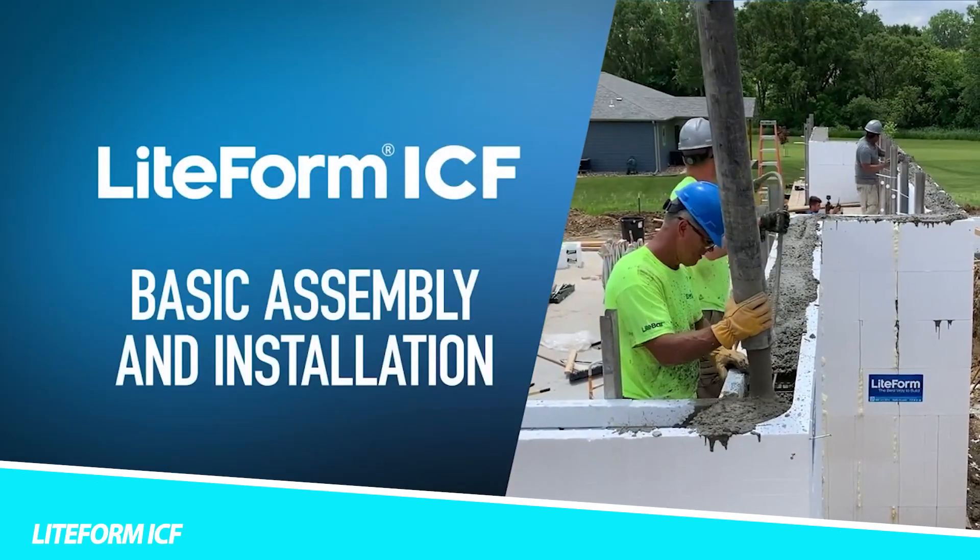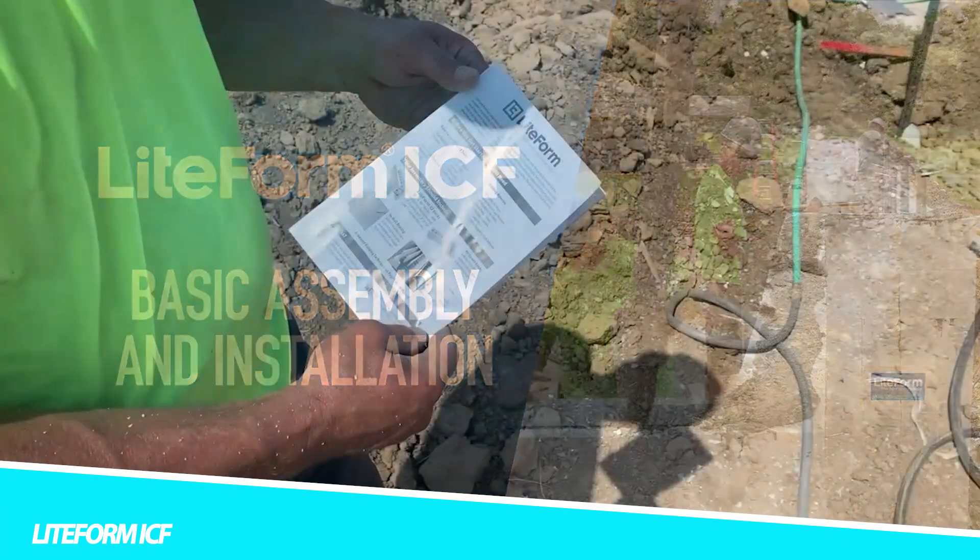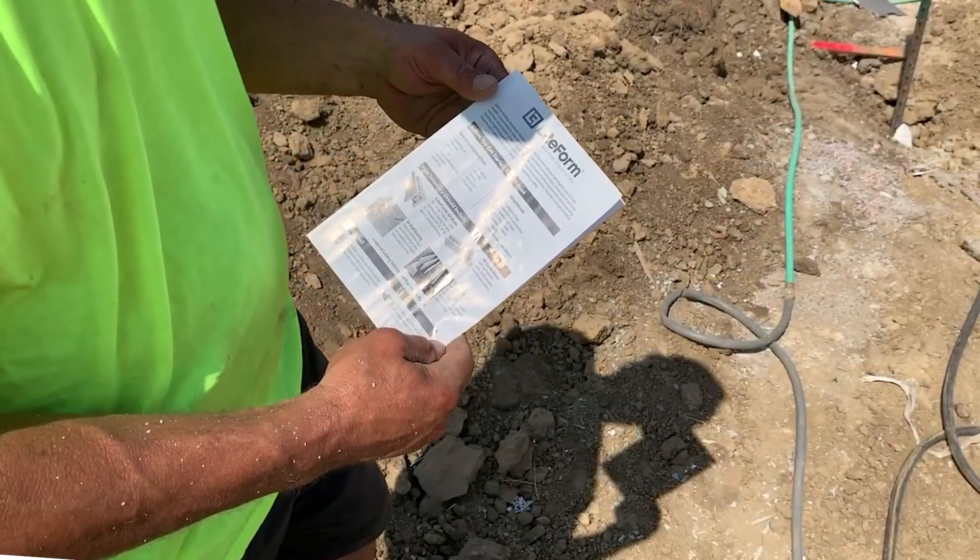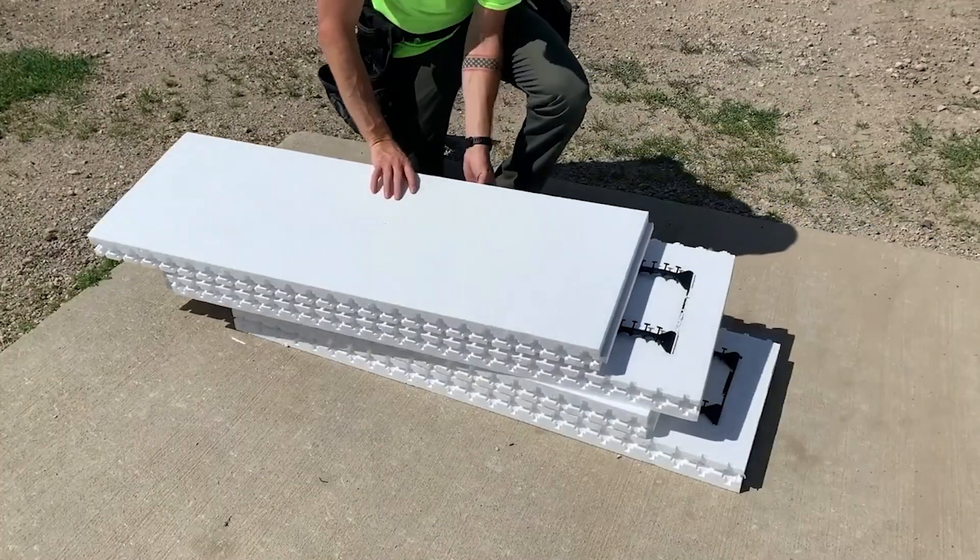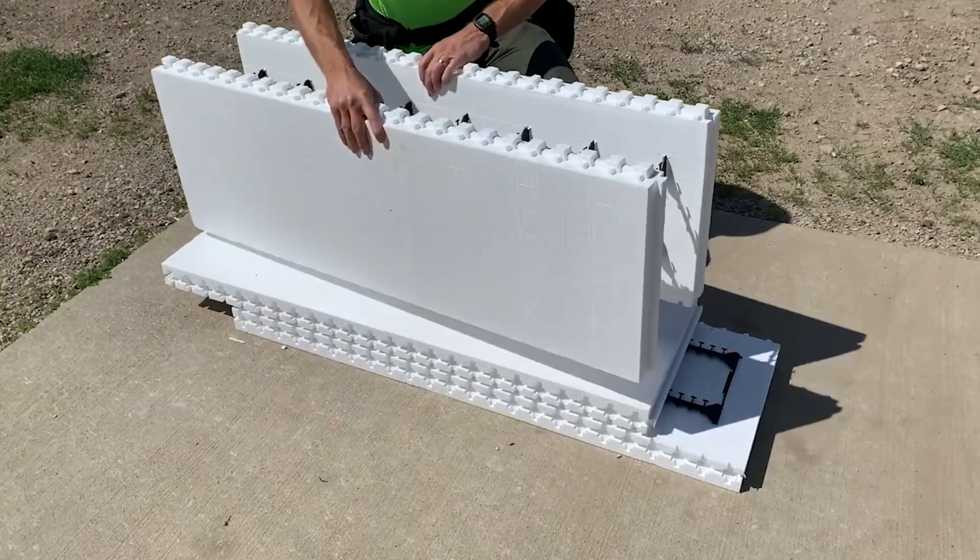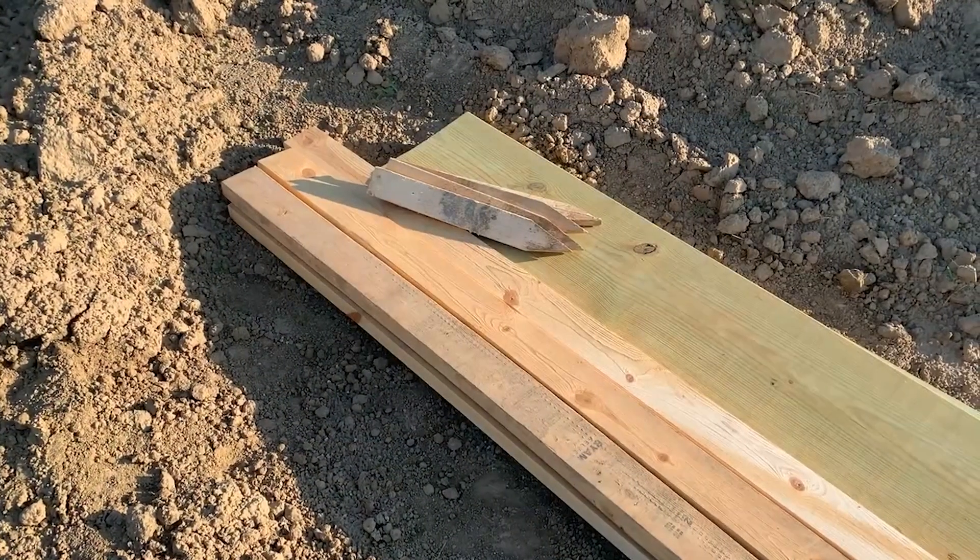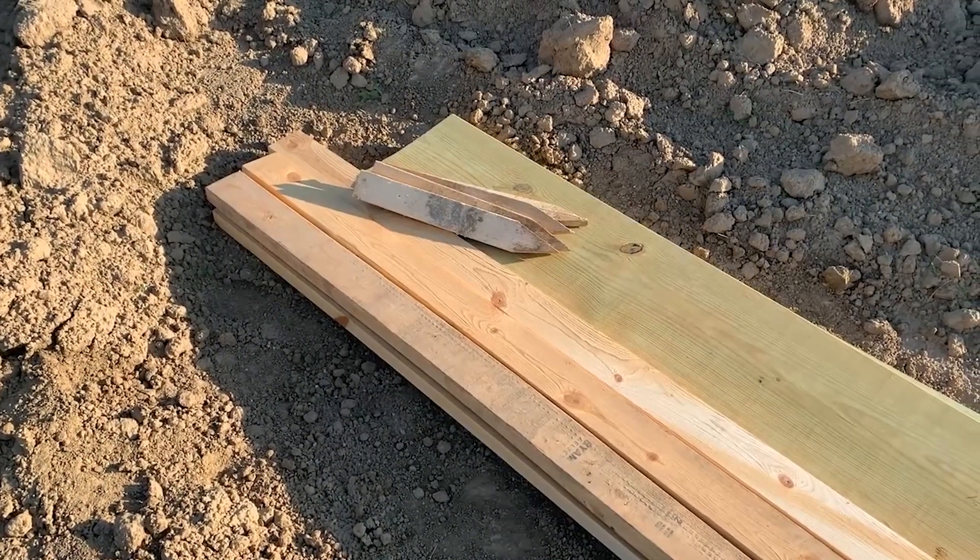Lightform ICF, insulated concrete forms, is a type of construction technique used in the construction of energy-efficient and durable buildings. The Lightform system is a series of interlocking foam blocks that are stacked and filled with concrete, creating a strong and insulated wall system.